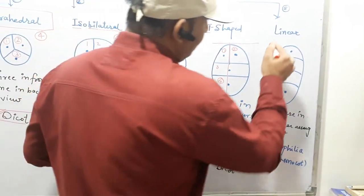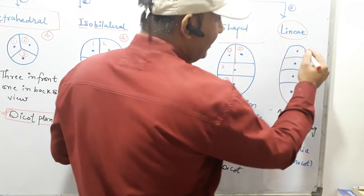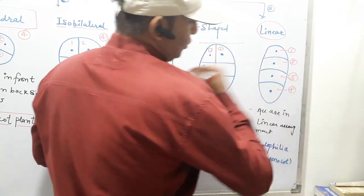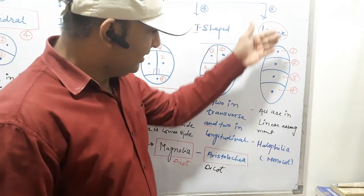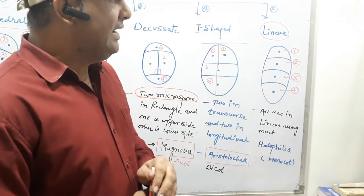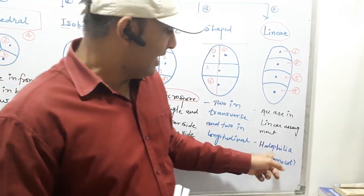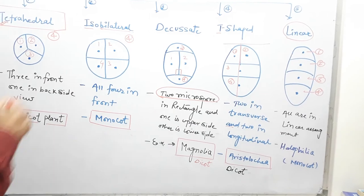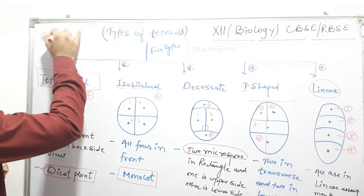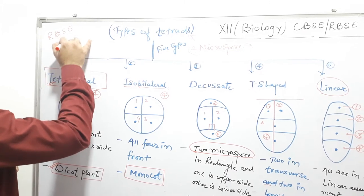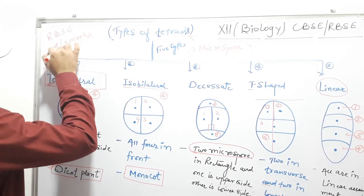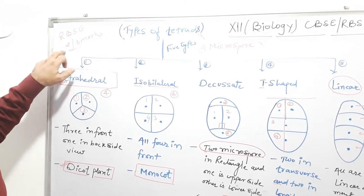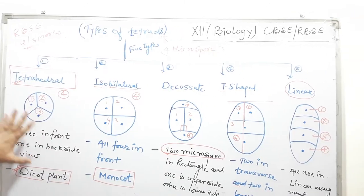Fifth is linear. As the name suggests, in a linear tetrad the microspores are present in a linear arrangement — first, second, third and fourth microspore in a row. The example is Halophila, which is a monocot plant. This is a very simple common topic, important for RBSC 12th board students as approximately two to three mark questions. There are five types of tetrads present in total.